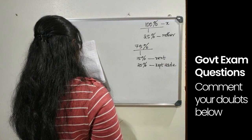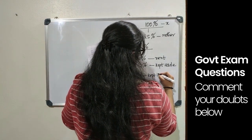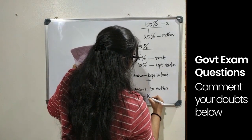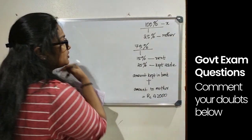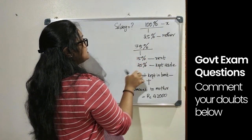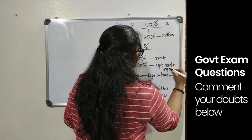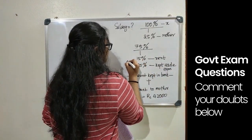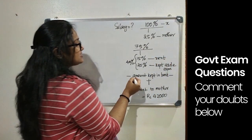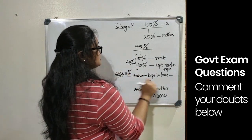Of the remaining 100 minus 25% or 75%, 15% she used towards rent and 25% kept aside for monthly expenses. So 15 plus 25, 40% of 75% was used for rent and expenses. Rest of the amount, 60% of 75%, was kept in bank.